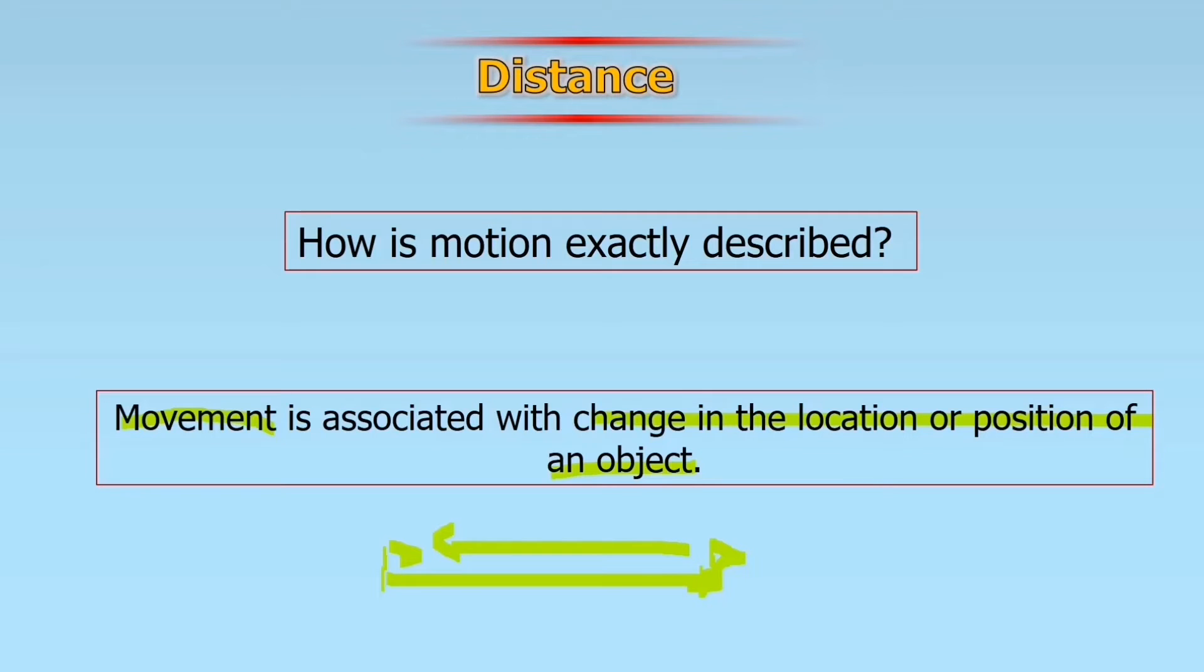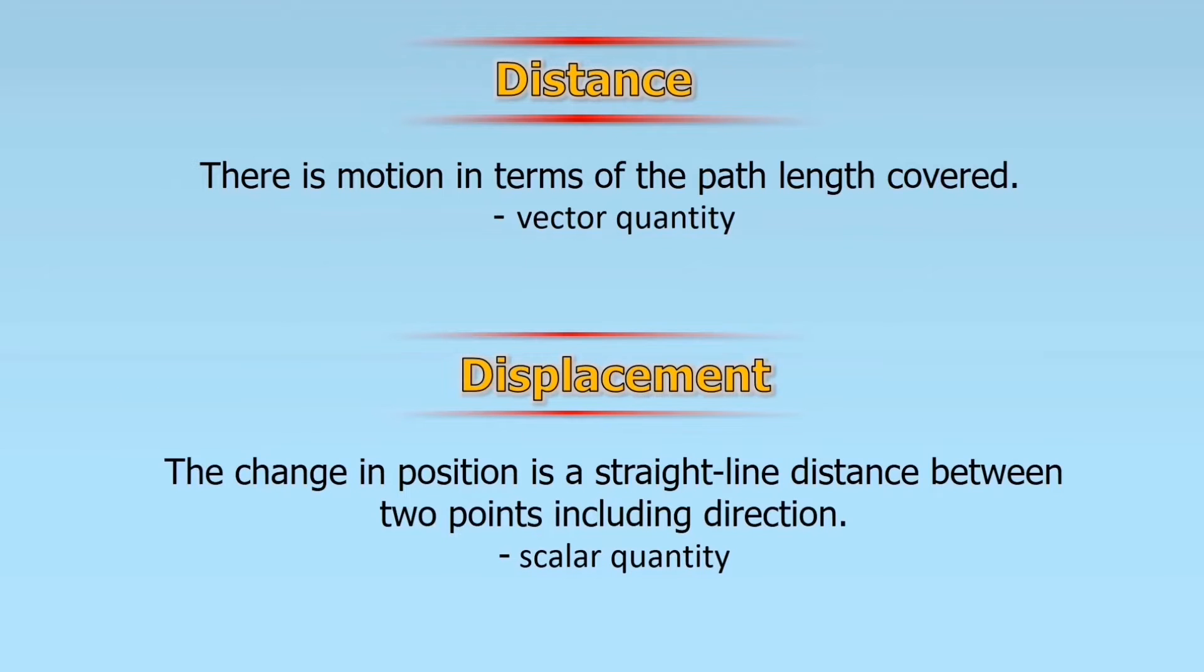This is described by distance and displacement. When we say distance, there is motion in terms of path length covered. So this is a vector quantity. There is direction and magnitude. For example, from one station, you move to the opposite station, there is distance that occurred. From the initial position to final position, there is distance that is covered.